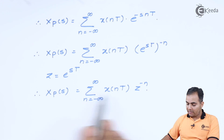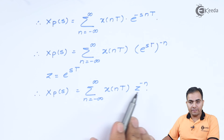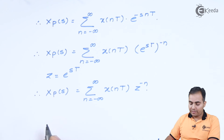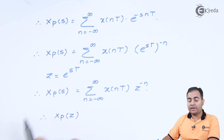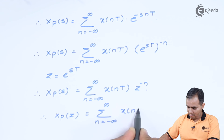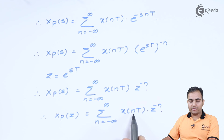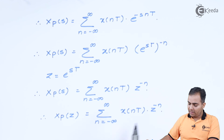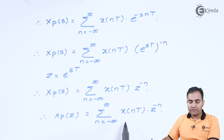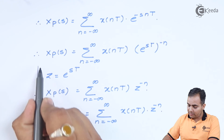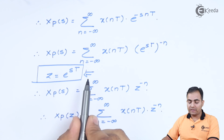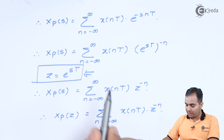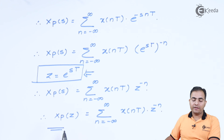As I said, if I replace e to the power sT by z, then this is nothing but the definition of Z-transform. According to the definition of Z-transform, we can replace Xp(s) by Xp(z), because now the function is transformed into the Z domain. The right-hand side becomes the summation of x(nT) times z to the power minus n. This is the relation for converting any continuous time signal into the discrete domain, and the key relation is z equals e to the power sT — called the impulse invariant transformation.